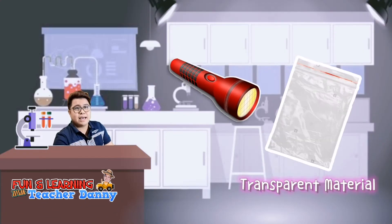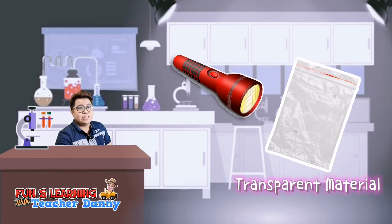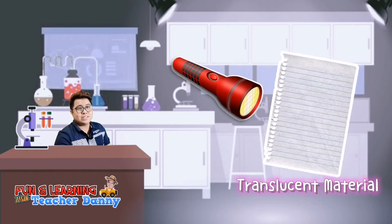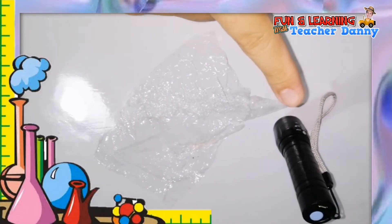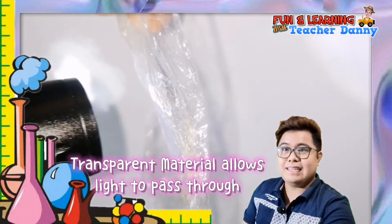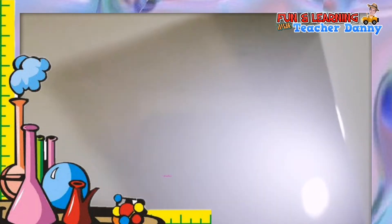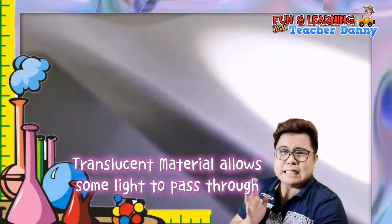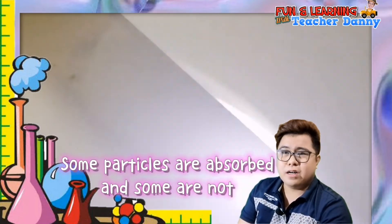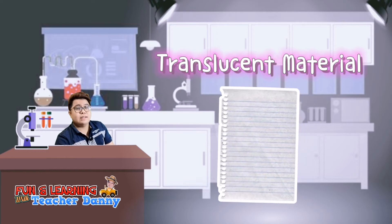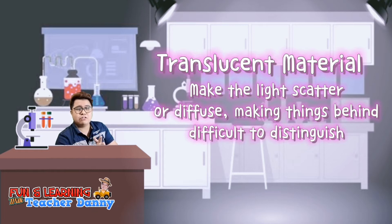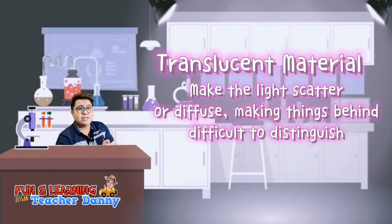Now let's try to beam the light on transparent materials such as the plastic, and also on translucent materials such as the paper. On the plastic, the light passes through completely. As for the paper, it did not allow light to pass through entirely — some particles of light are absorbed and some are not. These materials are what we call translucent because they make the light scatter or diffuse, making it difficult to distinguish objects behind them.